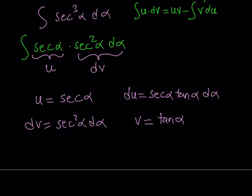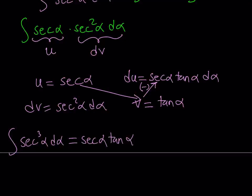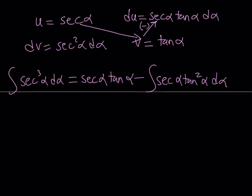The integration by parts formula tells us to multiply u and v, then subtract the integral of v du. So the integral of secant cubed alpha d alpha equals secant alpha tangent alpha minus the integral of tangent alpha times secant alpha tangent alpha d alpha, which gives us secant alpha times tangent squared alpha d alpha.